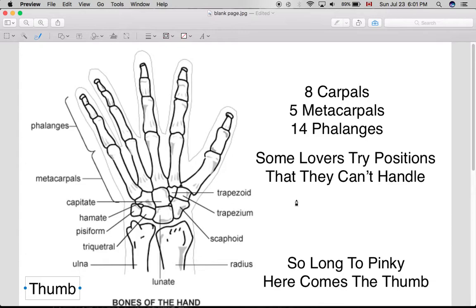Now there are a lot of mnemonics that people use to try and remember the bones of the wrist. One popular one is some lovers try positions that they can't handle. So this is scaphoid, lunate, triquetral, pisiform, trapezium, trapezoid, capitate, hamate.